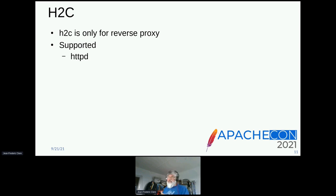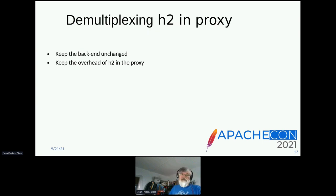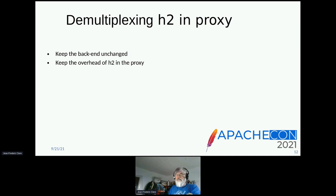There's no big difference between mod_proxy_ajp and mod_jk. Another way of proxying is using H2 in clear text, named H2C. H2C is only for reverse proxy and it's supported perfectly by HTTPD. One of the interesting things is that you would rather demultiplex H2 in the proxy, and that way you can keep the backend unchanged and keep the overhead of demultiplexing the frames in the proxy.